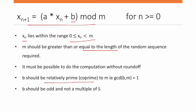And b should be relatively prime (coprime) to m, meaning gcd(b,m) = 1. The greatest common divisor of b and m should equal 1. That's why we call it relatively prime or co-prime. And b should be odd and not a multiple of 5.